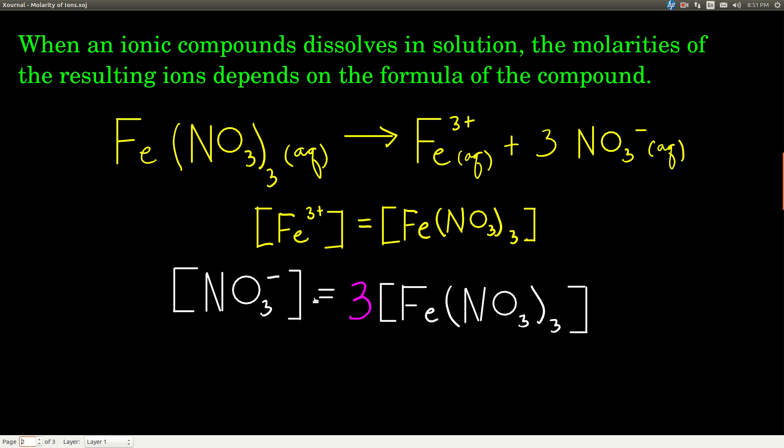But the concentration of nitrate in this solution will be 3 times the concentration of iron 3 nitrate. Notice it's just this subscript here times the concentration of this stuff, or this number right here. That's where this 3 came from, because there are 3 nitrates for every 1 iron 3 nitrate that breaks up. The concentration of nitrate will be 3 times that of the iron 3 nitrate.